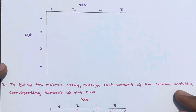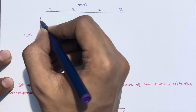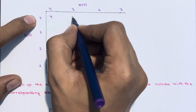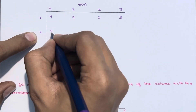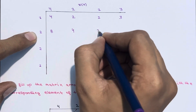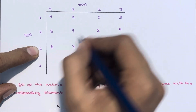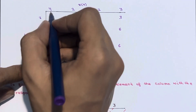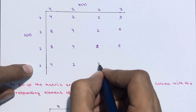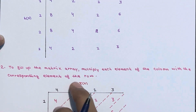The second step is to fill up the matrix array by multiplying each element of the column with the corresponding element of the rows. So: 1×4=4, 1×2=2, 1×1=1, 1×3=3; then 2×4=8, 2×2=4, 2×1=2, 2×3=6; then again 2×4=8, 2×2=4, 2×1=2, 2×3=6; and finally 1×4=4, 1×2=2, 1×1=1, 1×3=3.